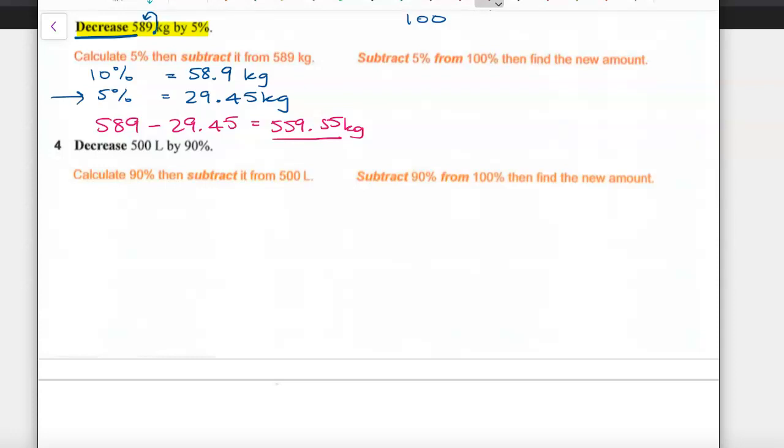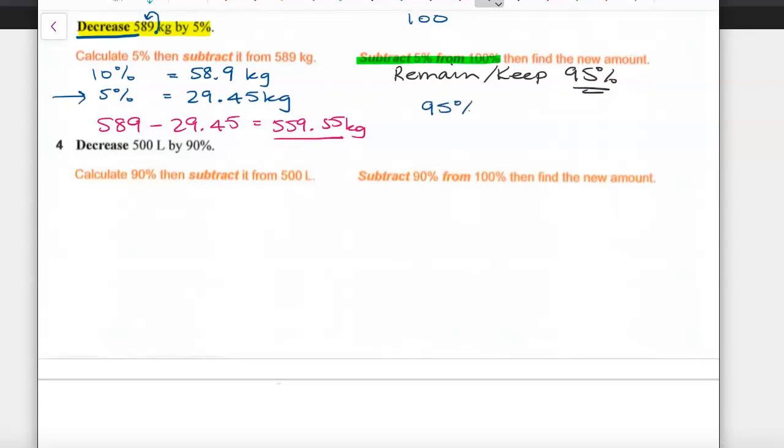Let's have a look at method 2. Rather than find 5%, let's just look at what we actually want to have remaining. We want to keep 95%. So let's take the 5% off the 100%. So I actually want to find 95% of the 589 kilos. We could grab our calculator, 95 over 100 lots of 589, and we will get the 559.55 kilos. So we can concentrate on what we want to keep, which is 95% of the total value.